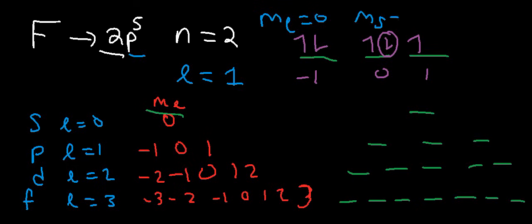Now, ms, the electron spin, because the arrow is facing downward, it's going to be negative 1 half. So those are the four quantum numbers for the fluorine atom, the last electron in the fluorine atom, the 2p5 electron.